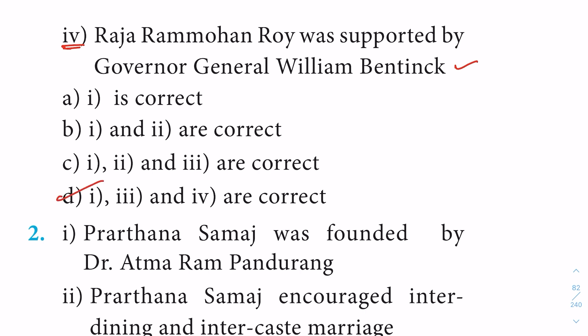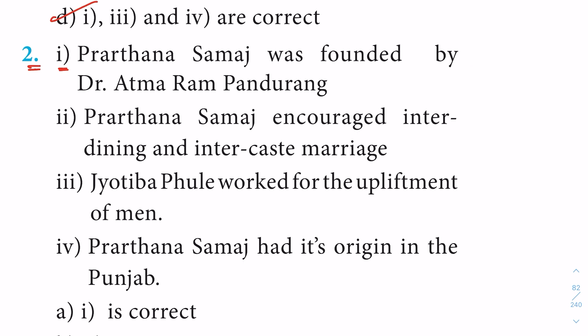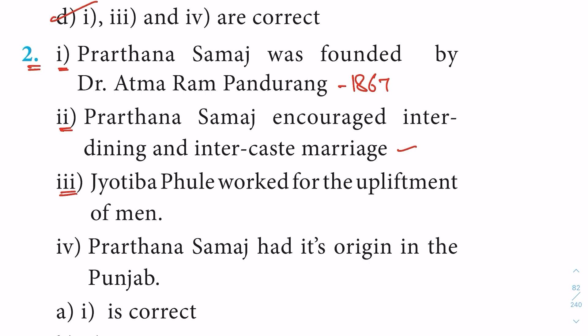Question 2: Statement 1 — Prarthana Samaj was founded by Dr. Atmaram Pandurang — correct, started in 1867. Statement 2 — Prarthana Samaj encouraged inter-dining and inter-caste marriage — correct. Statement 3 — Jyotiba Phule worked for the upliftment of men — wrong, he worked for women's upliftment. Statement 4 — Prarthana Samaj had its origin in Punjab — wrong, it originated in Maharashtra. Option C: statements 1 and 2 are correct.